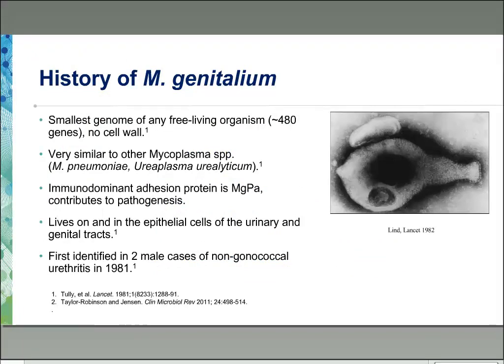Mycoplasma genitalium is actually one of the smallest genomes of any free-living organism. It only has roughly 480 genes, and there's no cell wall, which is really an important point when we talk about antimicrobial therapy. It's very similar to other mycoplasma, like mycoplasma pneumoniae and ureaplasma urolyticum. The immunodominant adhesion protein is MGPA, which contributes to its pathogenesis. In this electron micrograph you can see the flask-shaped organism with a tip corresponding to the adhesion organelle. It lives primarily on the epithelial cells of the urinary and genital tracts.